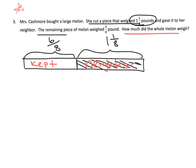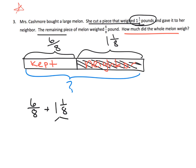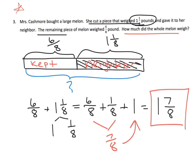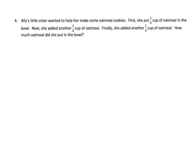The question is how much did the whole melon weigh, which means we're looking at the entire length. That would be six-eighths plus one and an eighth. Using the commutative property, we can think of it as six-eighths plus one-eighth plus one whole. Six-eighths plus one-eighth is seven-eighths, plus the one whole gives us the answer of one and seven-eighths.